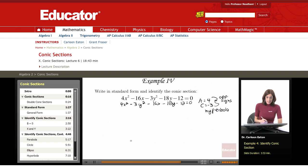Next task is to complete the square. I'm going to first add 12 to both sides to remove the constant from the left side. Then I'm going to group the x terms, which is 4x² - 16x. And then I have a -3y² - 18y, and that all equals 12.